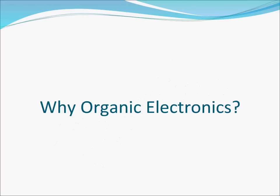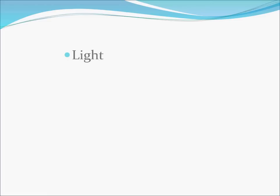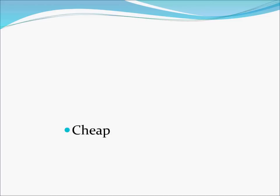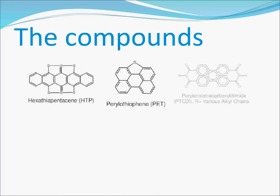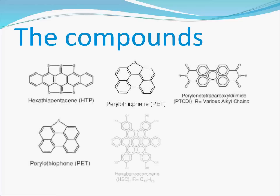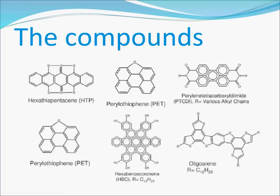So why organic electronics? These compounds are light in weight and flexible. Their easy availability makes them cheaper, and they are not harmful because of their degradability in nature. Around the year 1980, the electronic properties of organic compounds were discovered. Since then, organic compounds are used for fabrication of many organic electronic devices.